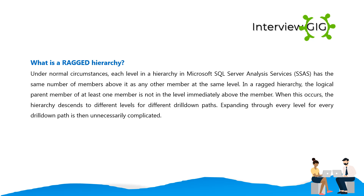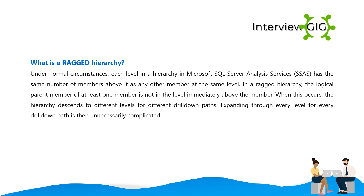A ragged hierarchy occurs when each level in a hierarchy in SSAS does not have the same number of members above it as other members at the same level. The logical parent member of at least one member is not in the level immediately above it. When this occurs, the hierarchy descends to different levels for different drill-down paths, making expanding through every level unnecessarily complicated.